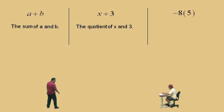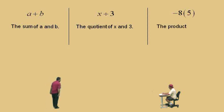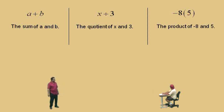Let's do this one over here — don't get scared. What is this, Charlie? A sum, a difference, a product, or a quotient? Product — it's the product, that's right. It's the product of what two things, Charlie? Negative 8 and 5. Negative 8 and 5 — that's it, that's all you got to do.